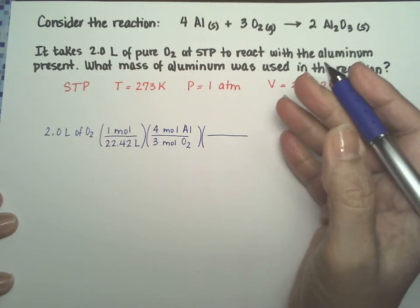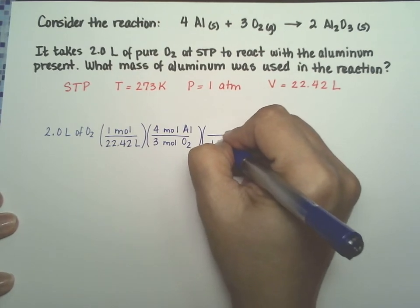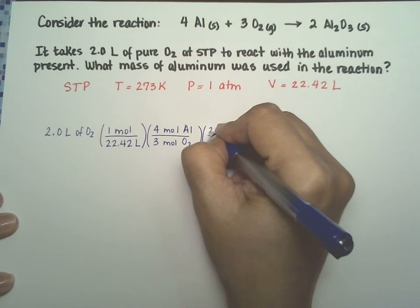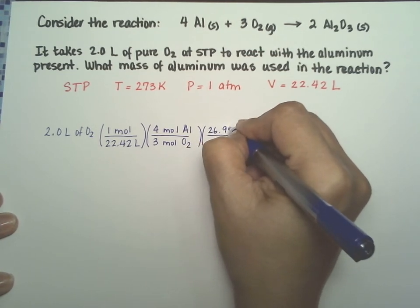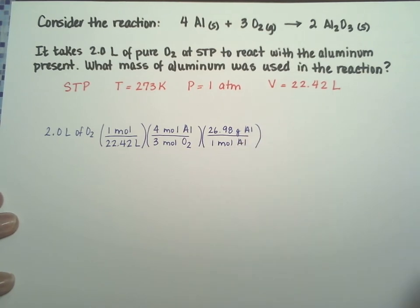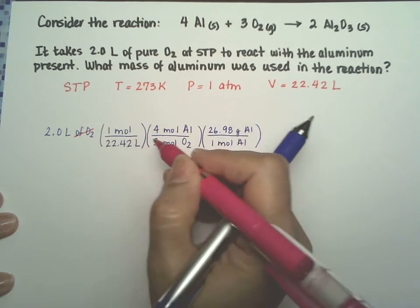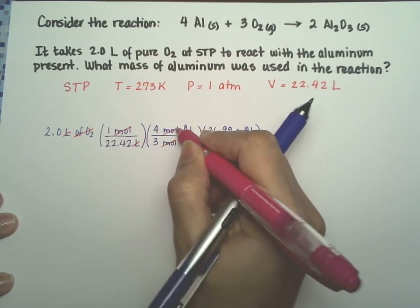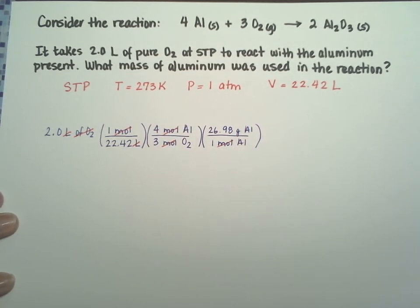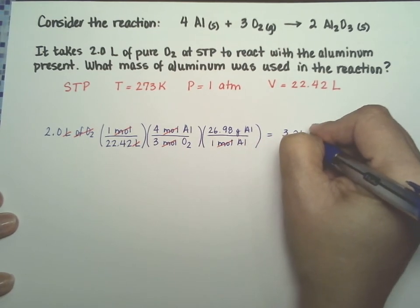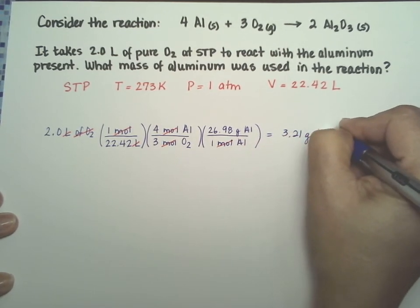Now I need the molecular weight of aluminum and if you go to the periodic table, you'll find that it is 26.98 grams of aluminum. Alright, out of habit. Oh, I'm sorry, liters. Moles cancel of oxygen. Moles of aluminum cancel and I am left with 3.21 grams of aluminum.